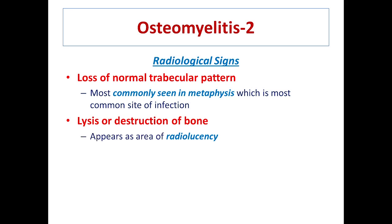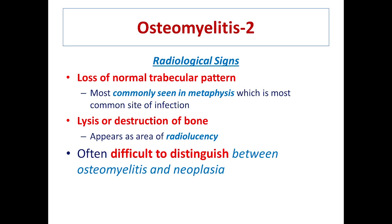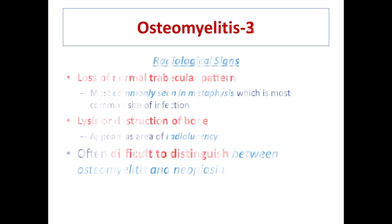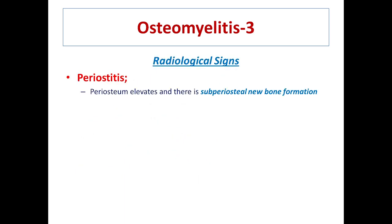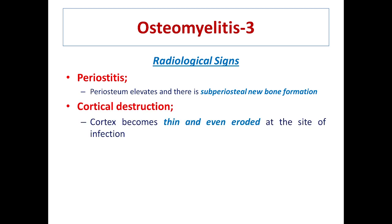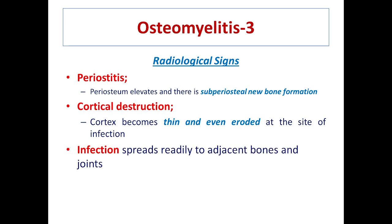The second radiological sign is lysis or destruction of bone, which appears radiolucent. It should be very clear that radiographically osteomyelitis and neoplastic growths look very similar, so it is often difficult to distinguish between them. Do not give any tentative diagnosis until histopathology is done. Next is periostitis, with subperiosteal new bone formation. The bone with osteomyelitis will have a thin and eroded cortex at the site of infection, and infection can spread from one bone to another and into joints.